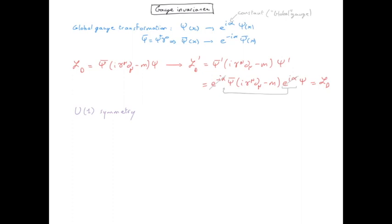However, this is true for the case of global gauge transformation, where alpha is a constant. We are now looking at the case of local gauge transformation, where alpha is a function of spacetime.